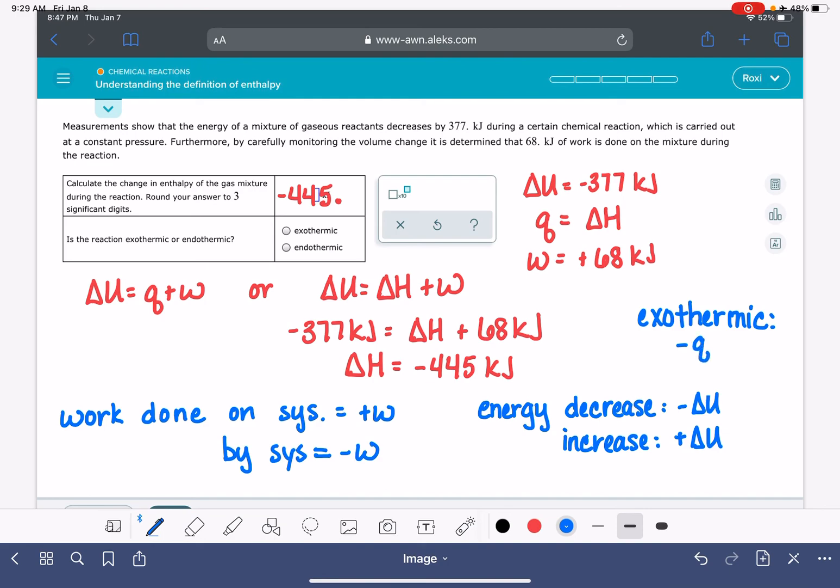Exothermic has a negative delta q, and also that means it has a negative delta H. Endothermic is going to be a positive q and a positive value of delta H. So since this has a negative value of q or delta H, that means that this is exothermic.